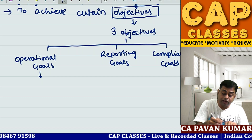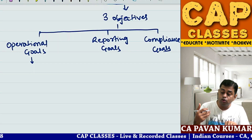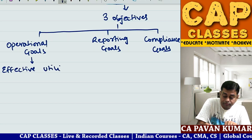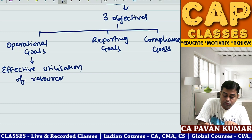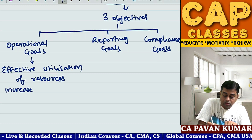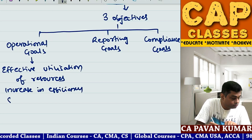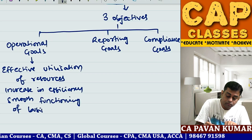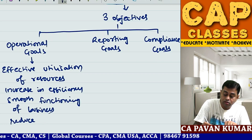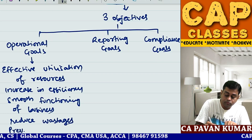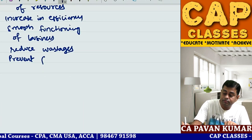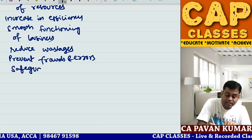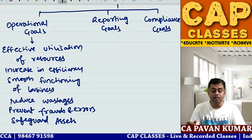Operating goals, or operational goals, are the goals to ensure effective utilization of resources, increase in efficiency, smooth functioning of business, reduce wastages, prevent frauds and errors, and safeguard assets. These are basically the operational goals.